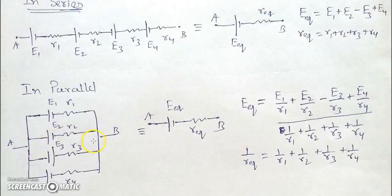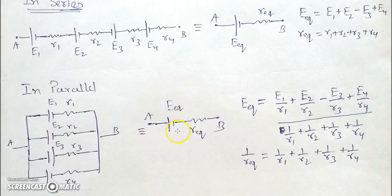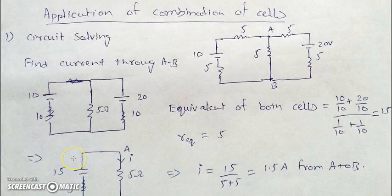The meaning of equivalent is: between points A and B, whether we connect these four batteries or this one equivalent battery with its equivalent resistance, there will be no difference — the same current, the same potential difference. That's why we call this one battery the equivalent of all those batteries.